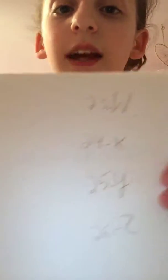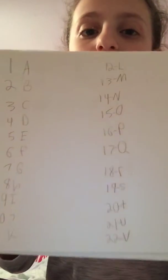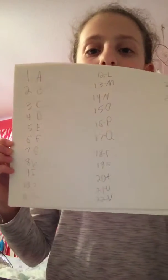Now I have this coordinating chart. The number you have should coordinate to one of these letters. So, like 1 is A, 2 is B. Here it is. Find the letter that your number goes to in your head.